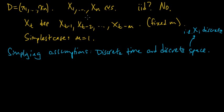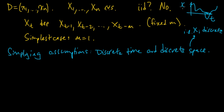By discrete time we mean that time occurs at discrete intervals — t equals 1, t equals 2, and so on — rather than continuous. You can actually have what's called a continuous time Markov process, where Xt is a random function that takes a value at every single real-valued number t.